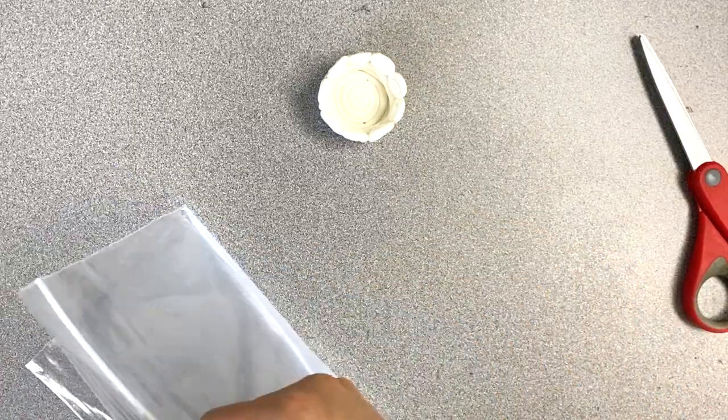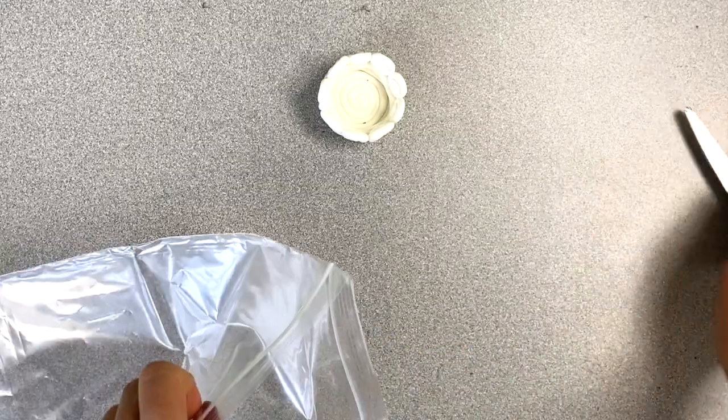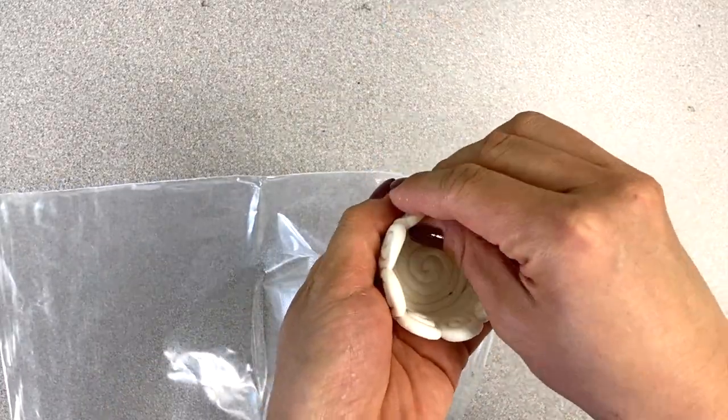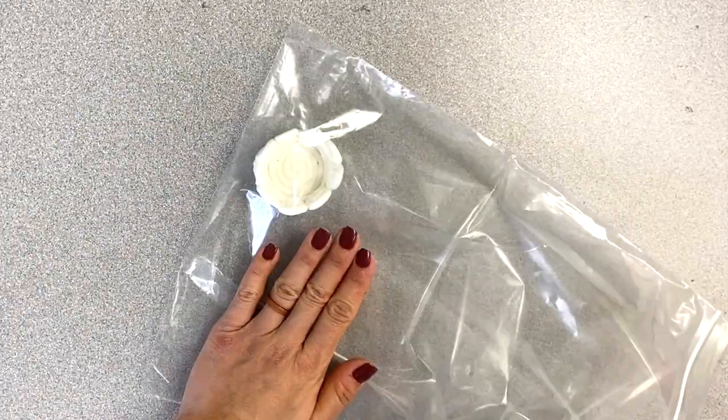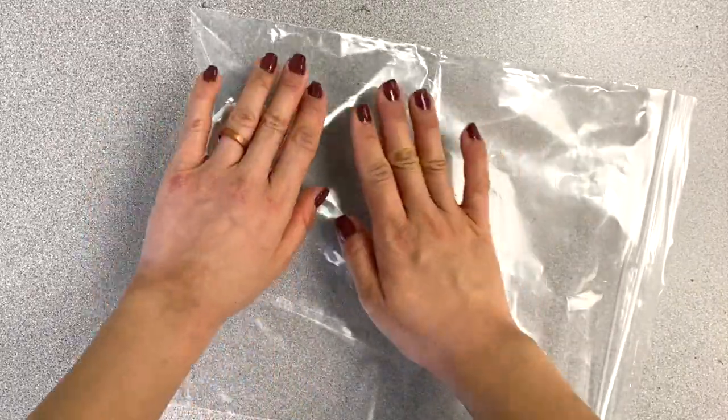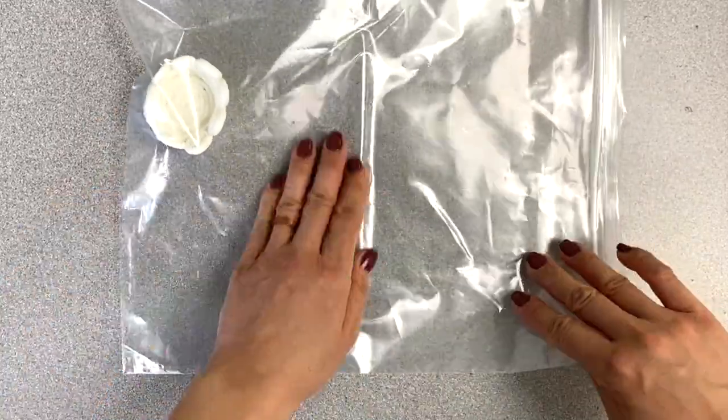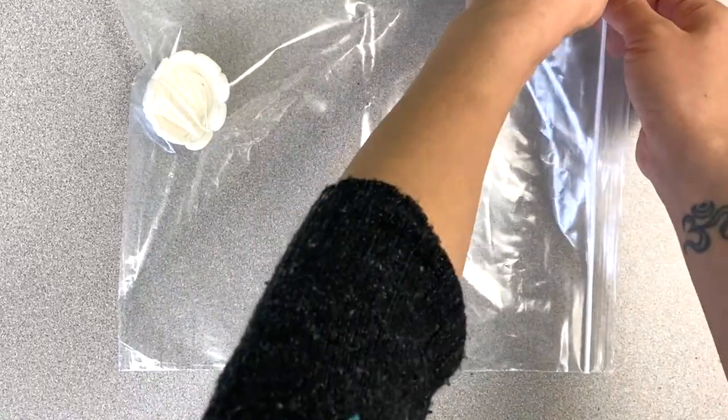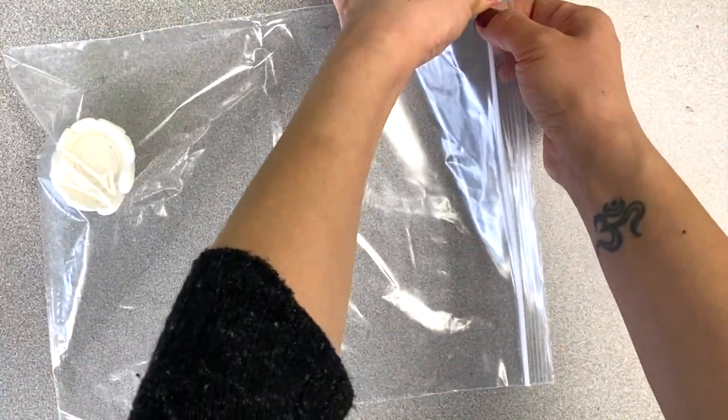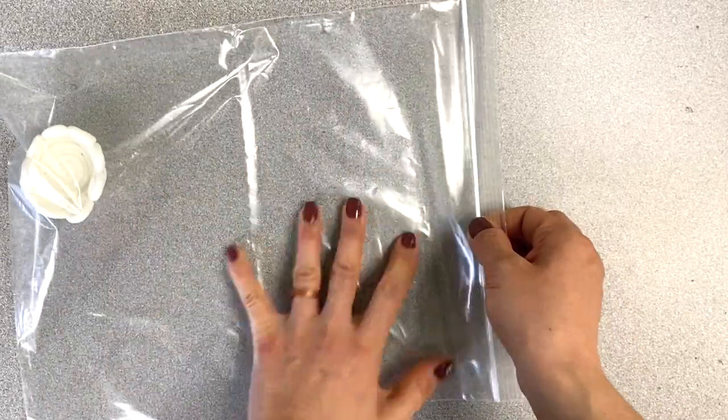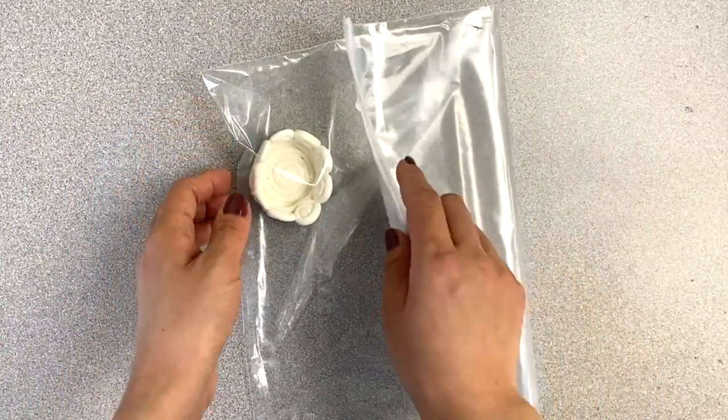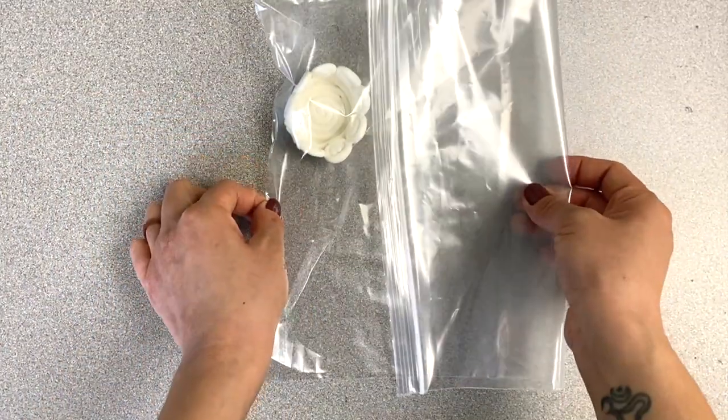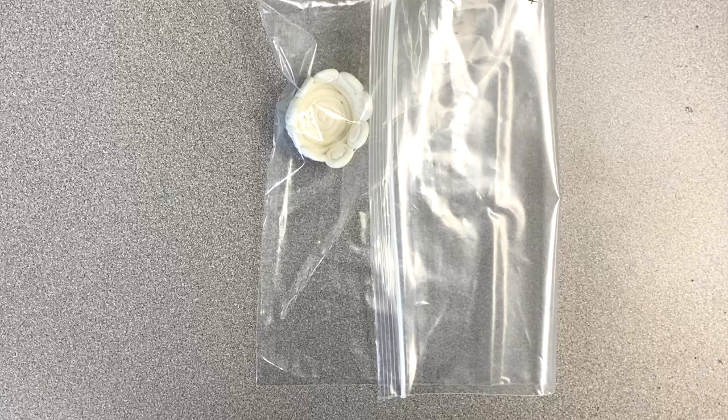Now we're going to take our second ziplock bag and we're going to carefully place the coil pot inside the bag. This is going to keep it soft until next week when we start working on it again. Make sure you're pressing out all of the air and you're closing the top so no air is going to get in. If it is open it will start to dry up and next week it will be too dry to continue working on, so make sure all of the air is out and then place it someplace safe for next week.